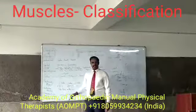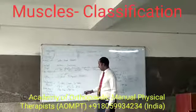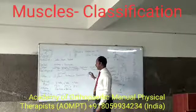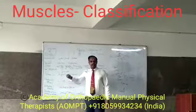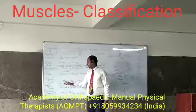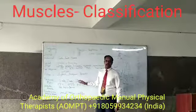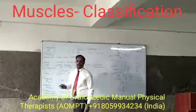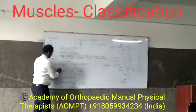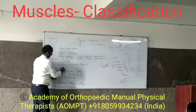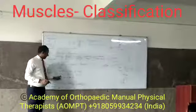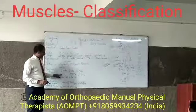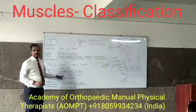Classifying muscles depending upon their action is commonly used in physical therapy. Understanding the basic principle of physics, we have first order, second order, and third order lever muscles. The first order lever is called the lever of stability, where the fulcrum is between the effort and the weight. Effort means insertion, fulcrum is the joint, and weight is the center of gravity of the body.